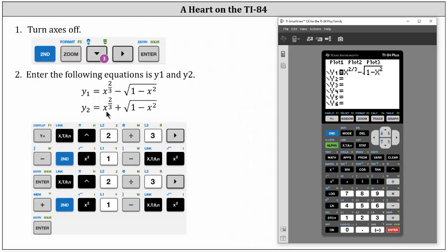Notice y2 is almost the same, except the subtraction is replaced with addition. So we have x to the power of two divided by three, right arrow plus the square root of the quantity one minus x squared, enter.